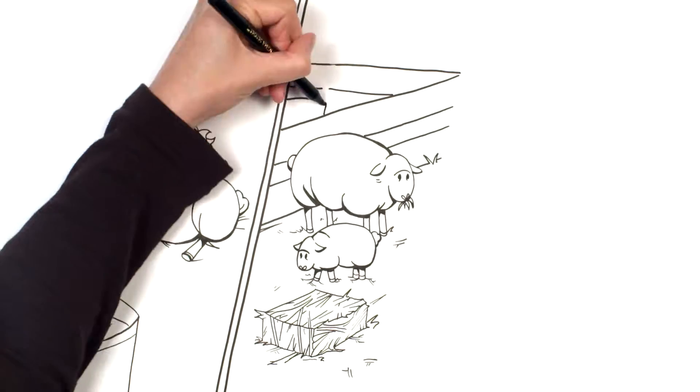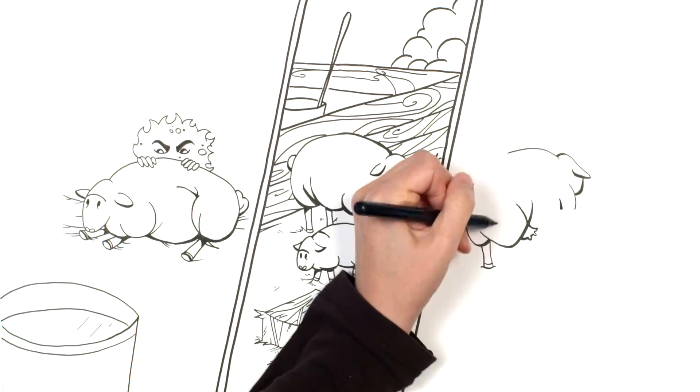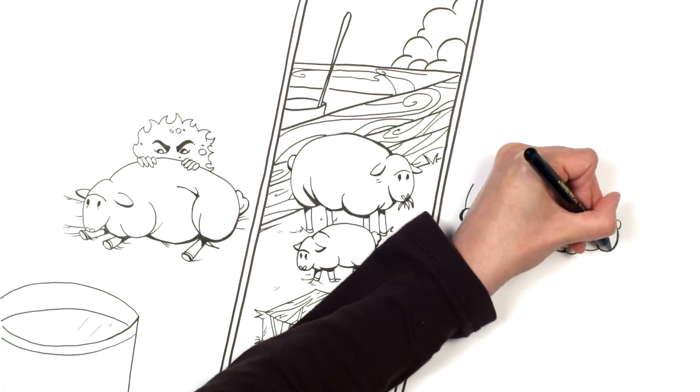And even though I always try to keep things clean, those ewes were spreading MAP all over the pen through their manure, exposing any lambs born in that pen.